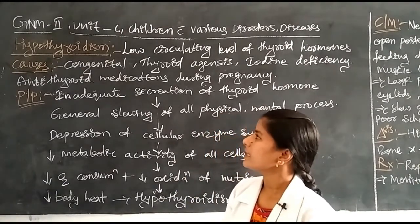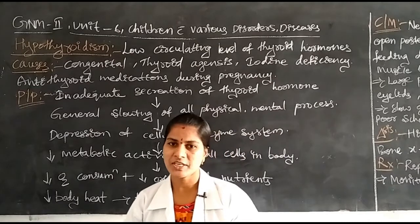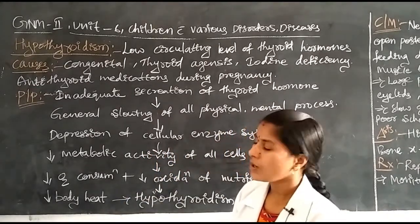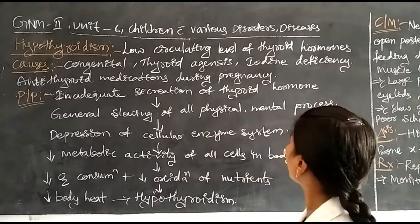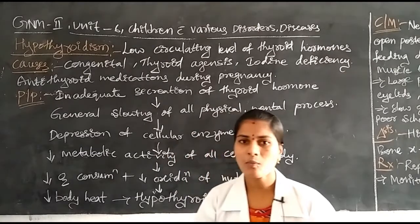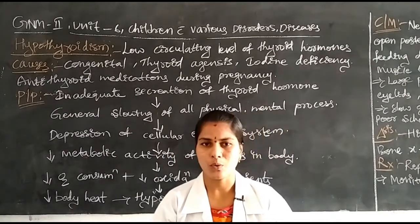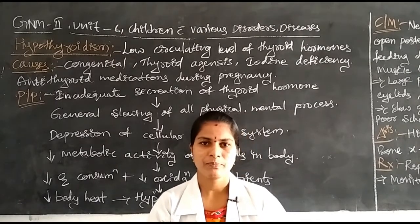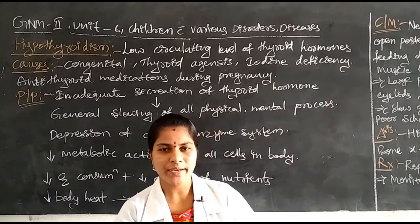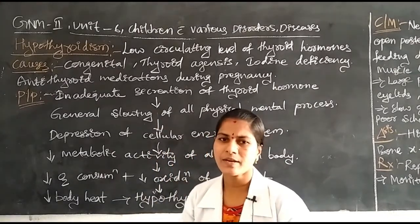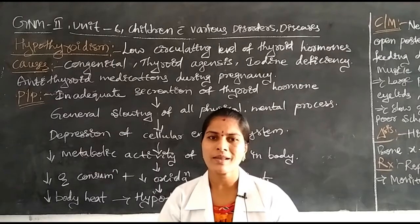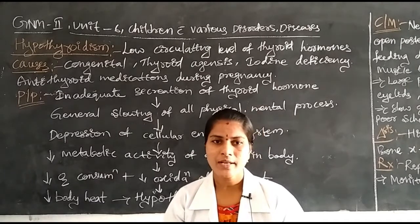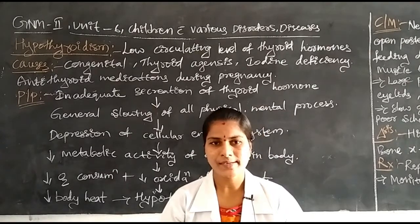Now, the definition of hypothyroidism: hypothyroidism is a decreased or low circulating level of thyroid hormones in the body. The prefix 'hypo' means decreased or low level. So thyroid hormone decrease in the body is called hypothyroidism.